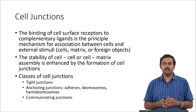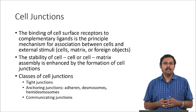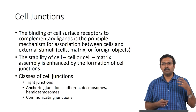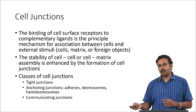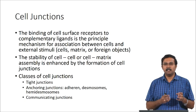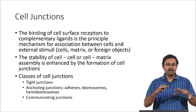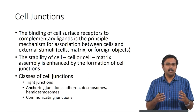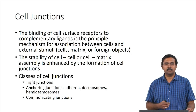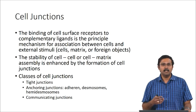Coming back to the biology aspect: cell junctions are created when we talk about cell adhesion. The binding of cell surface receptors to complementary ligands is the process by which there is association between a cell and external stimuli. External stimuli could be cells, materials, cells-matrix, or foreign objects — our scaffold would technically be a foreign object. The stability of these cell-cell or cell-matrix assemblies can be enhanced by the formation of these cell junctions. There are different classes: tight junctions, anchoring junctions, and communicating junctions.